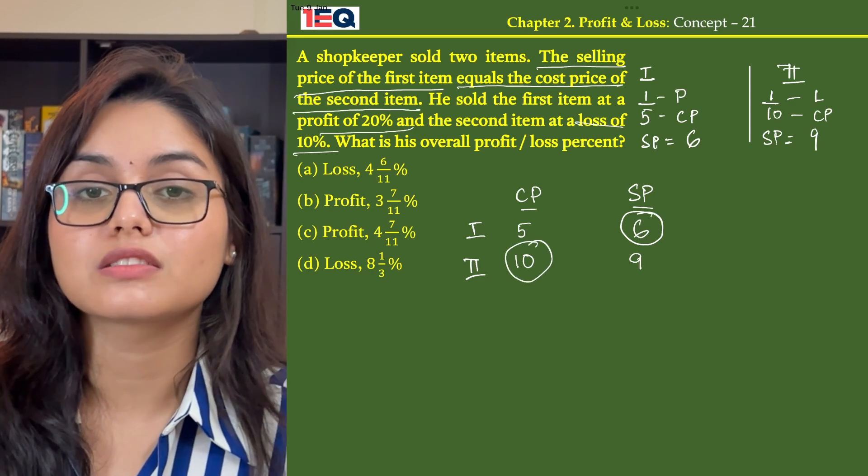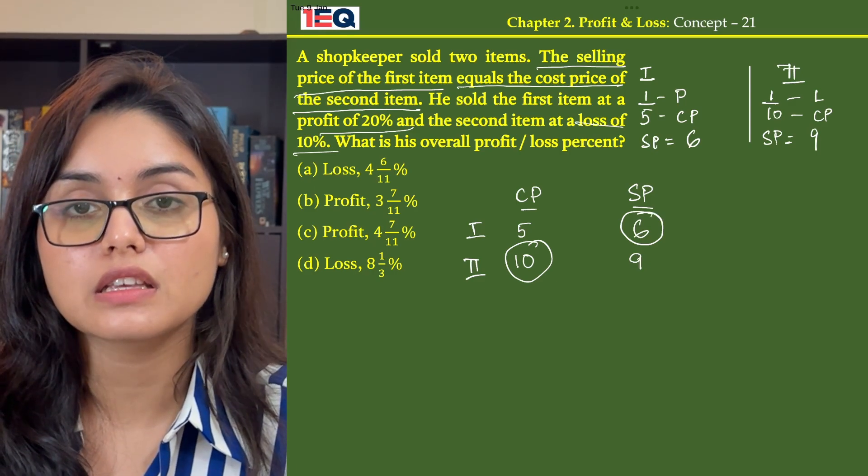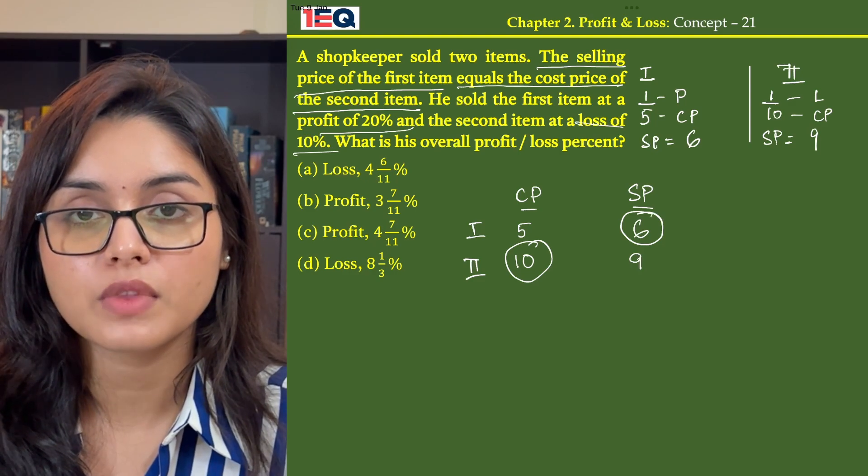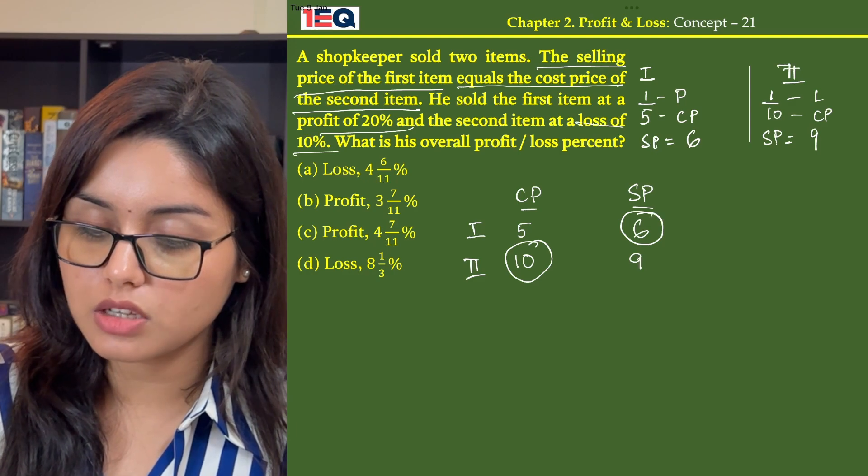These two places need to have the same number. So in order to get the same amount there, we will find the LCM of 6 and 10, which is 30.